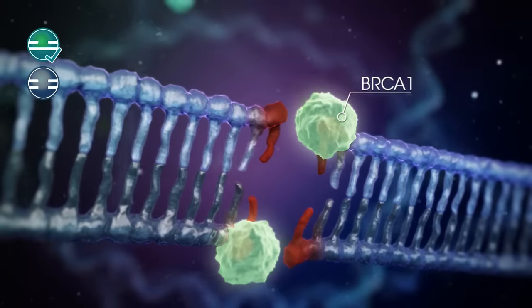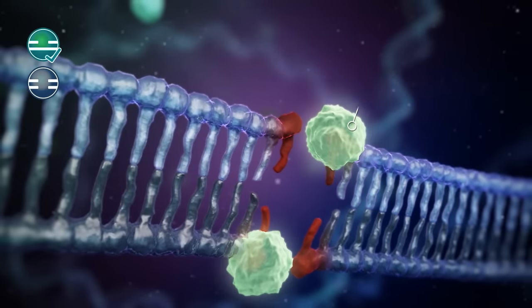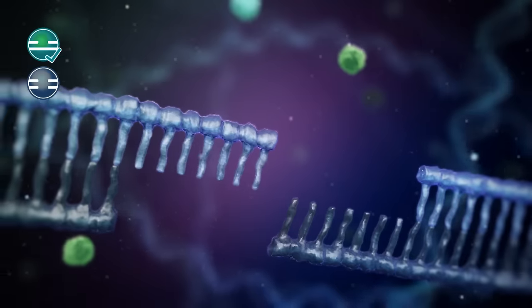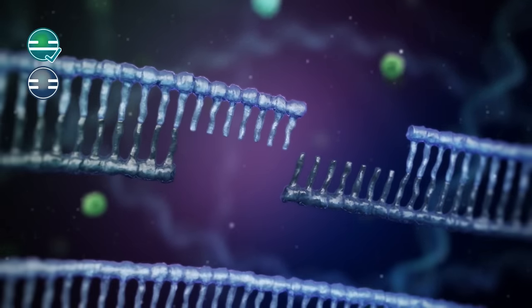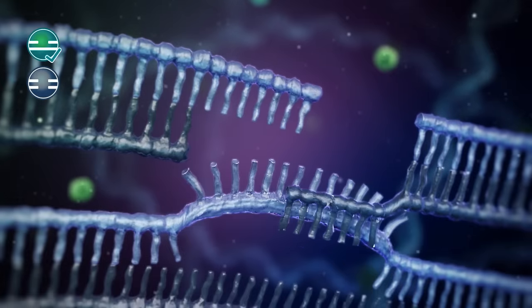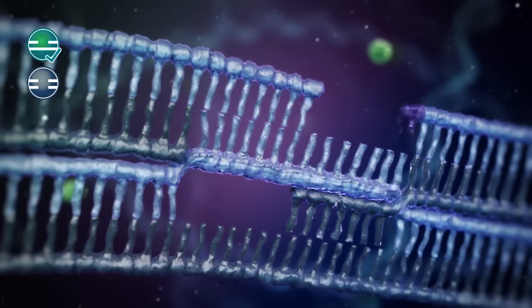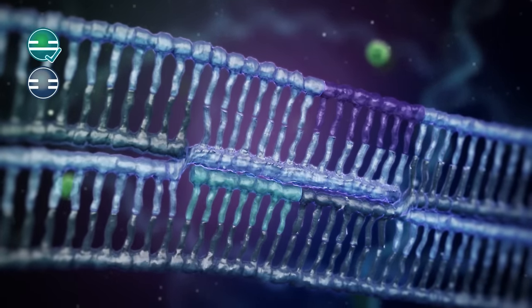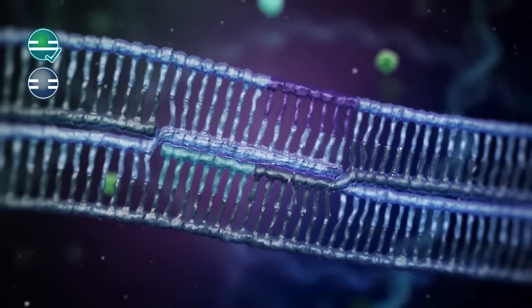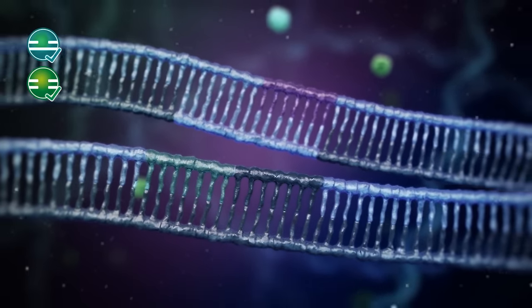BRCA1 protein binds the loose ends of the DNA and starts to unravel the DNA strands. Using the undamaged DNA strand as a template, the damage is then repaired. Finally, the two strands are separated, leaving both DNA strands error-free.